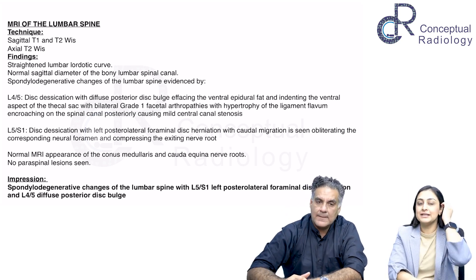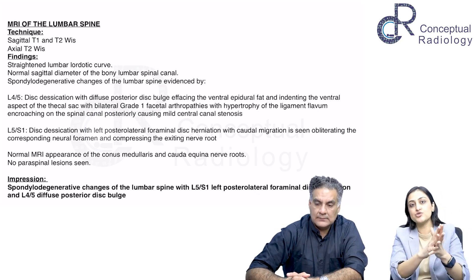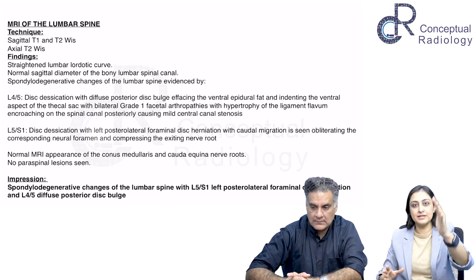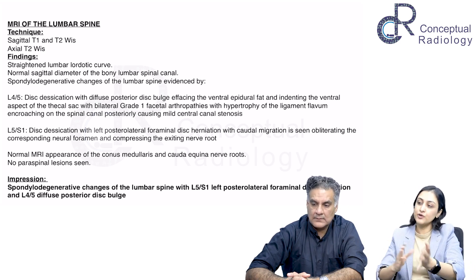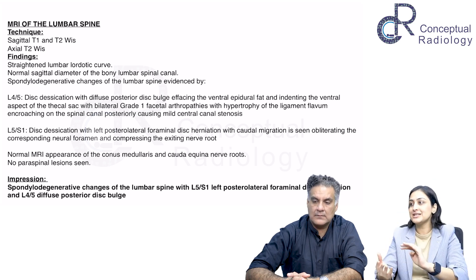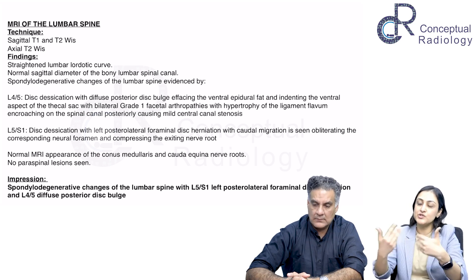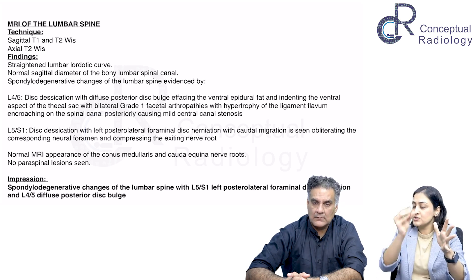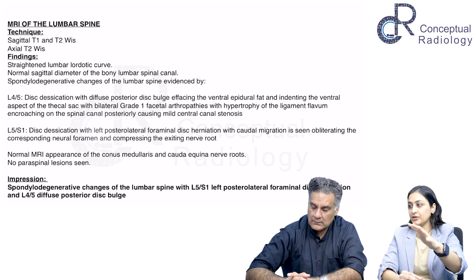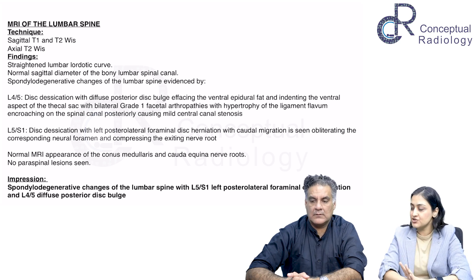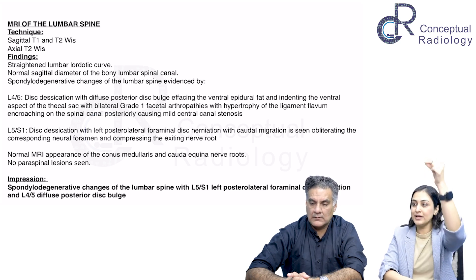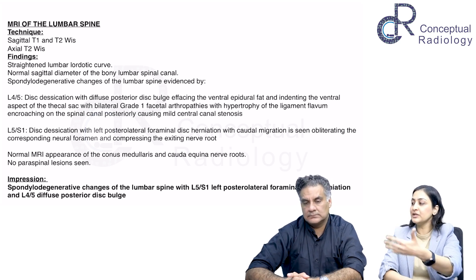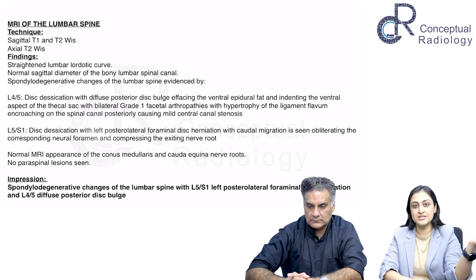Basically, to summarize how we approach an MRI spine, a short form to remember is ABCD. We start with alignment — we check whether lordosis is maintained and look for listhesis. The second is bone marrow: whether there is any bone marrow signal intensity change that may bring to light a systemic issue in the patient. Then C for cord — checking for any cord compression resulting in cord signal intensity changes.